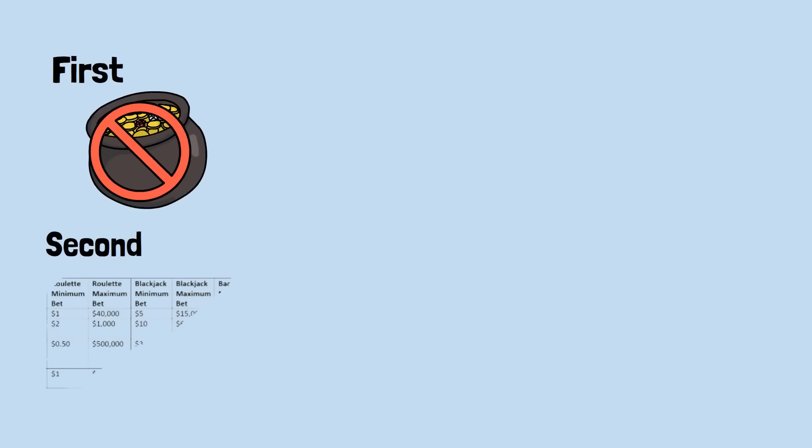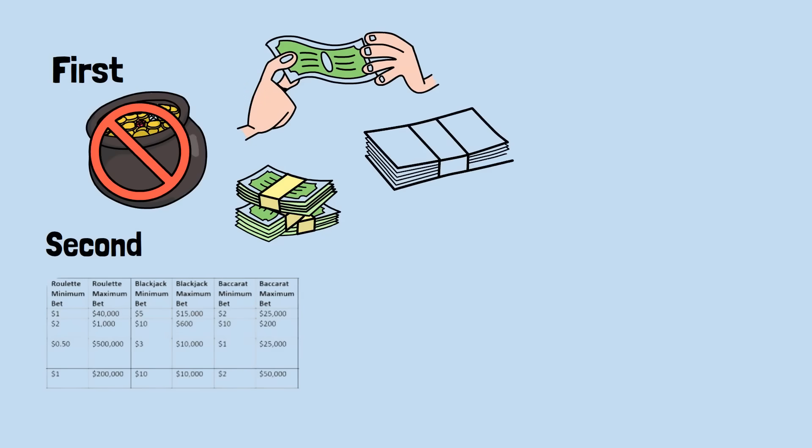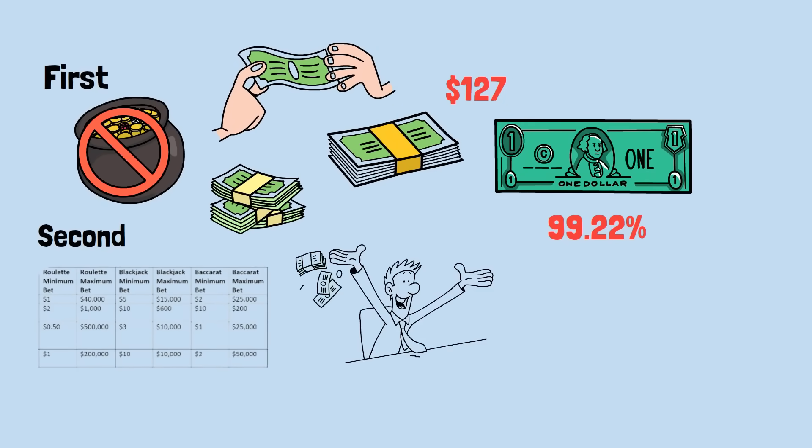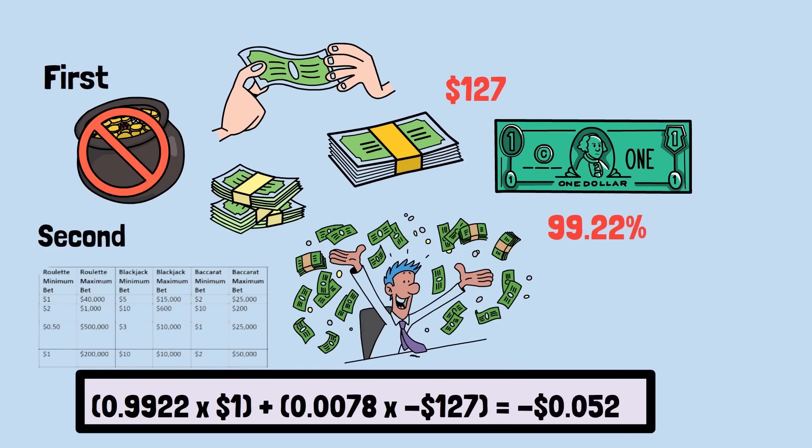First, you need an unlimited bankroll to guarantee success, which no one has. Second, casino betting limits prevent infinite doubling. Most critically, the expected value remains negative, regardless of your betting pattern. If you start with a $1 bet and can double seven times before hitting table limits, you risk losing $127 to win $1. Even with a 99.22% chance of success, meaning winning within seven spins, your expected loss per sequence is 0.9922 times $1 plus 0.0078 times negative $127 equals negative $0.0528. You still lose 5.28 cents per sequence on average, essentially the same house edge as flat betting.